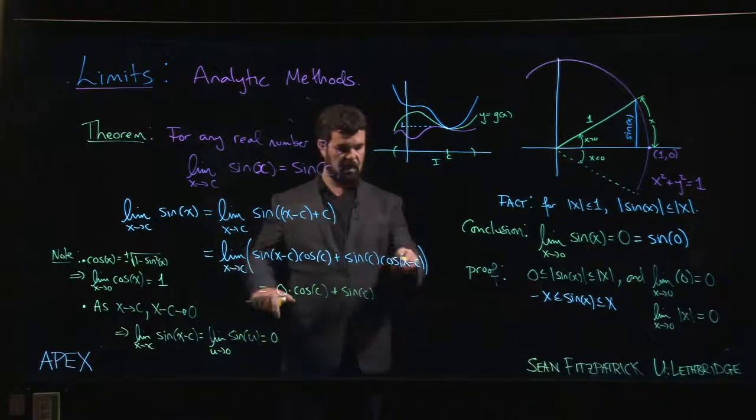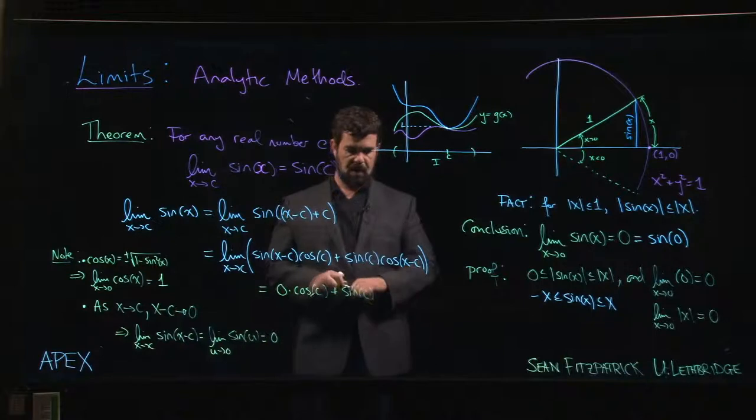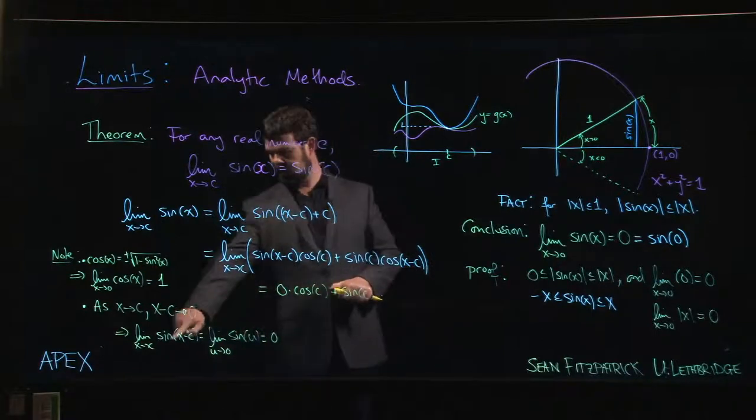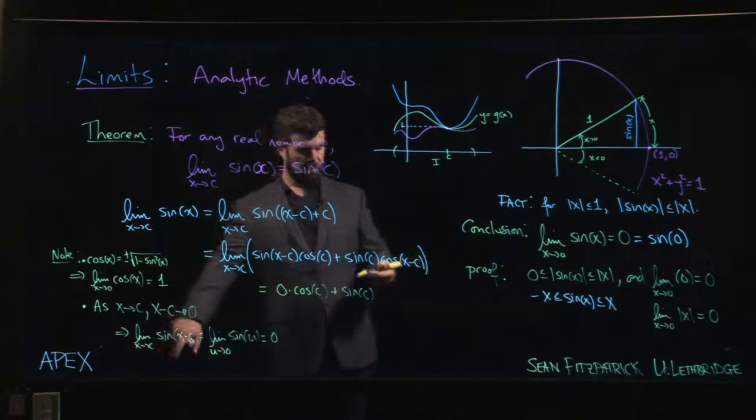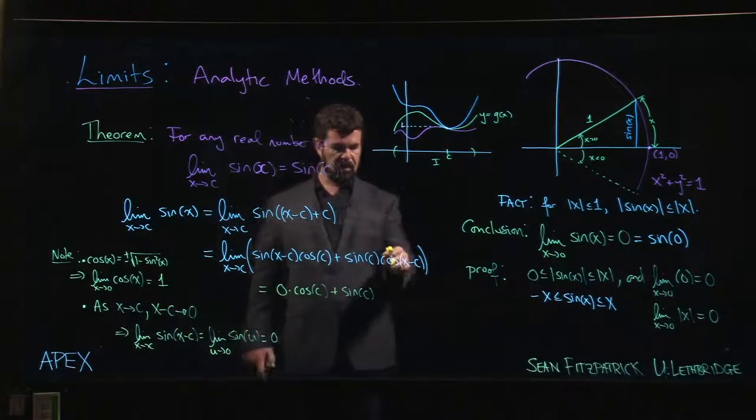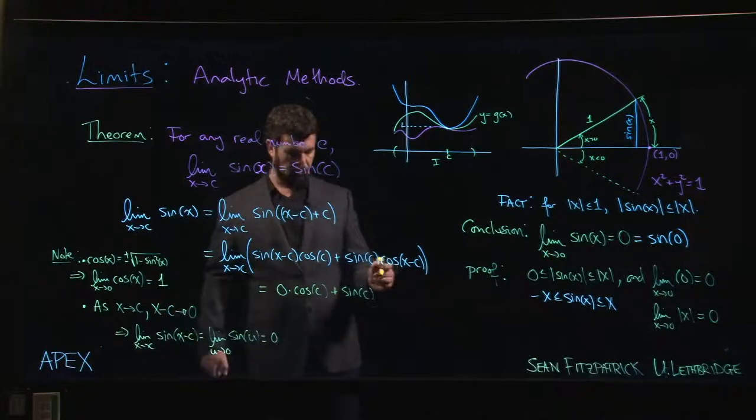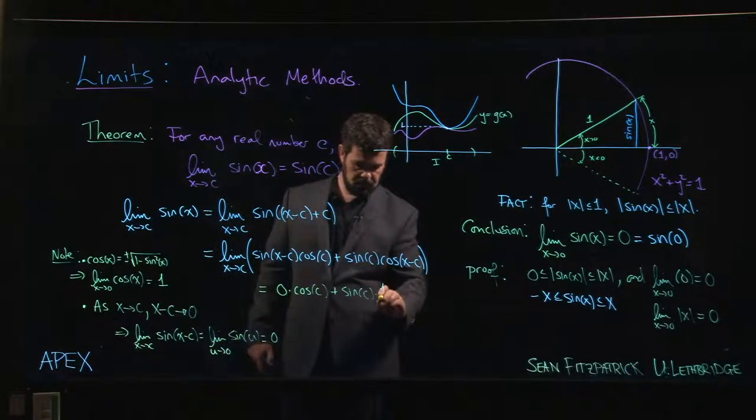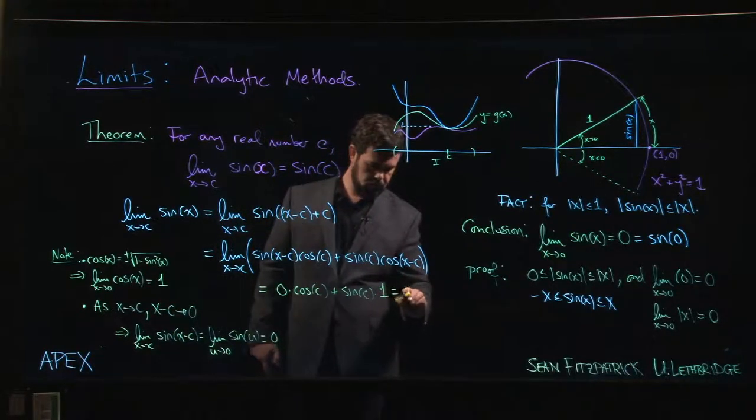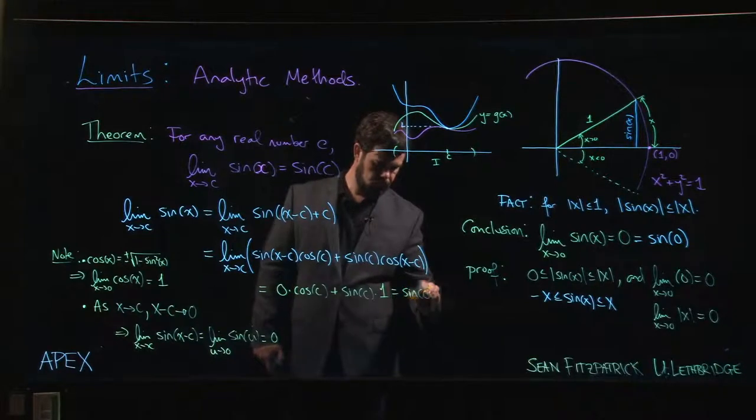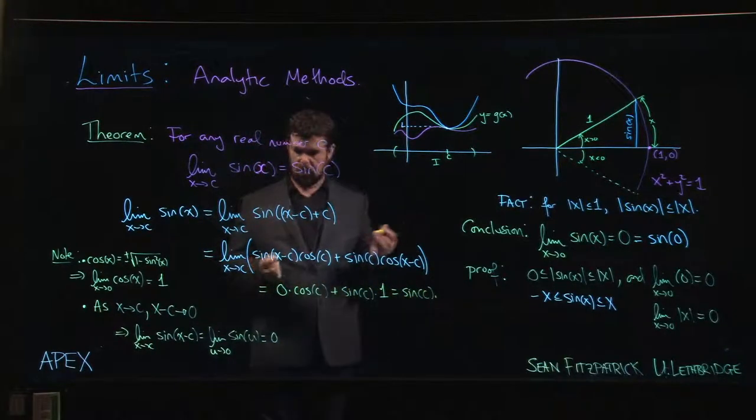And same reasoning that we just applied here for sine also works for cosine. So that's going to be the same thing as taking the limit of cos as x goes to 0. We've established that that's 1. So this is sine of c times 1. And that gives you sine of c.